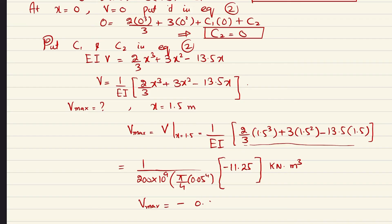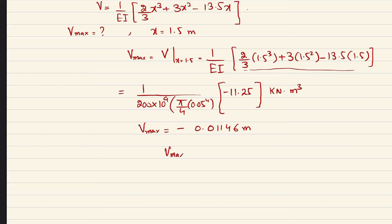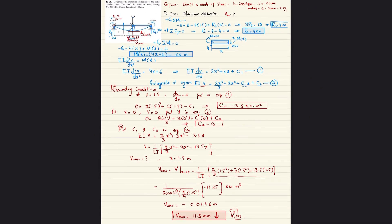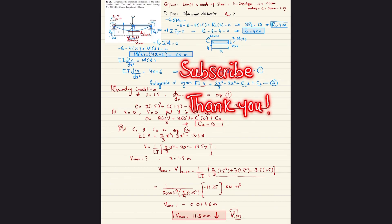After calculation, v_max = 0.01146 m, or 11.5 mm. The negative sign indicates the deflection is downward. This is the answer for problem 12-21. If you're new to the channel, subscribe and press the bell icon for notifications on new videos. Any questions can be asked in the comment section.